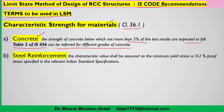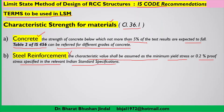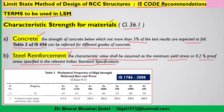The second material used in RCC structures is steel reinforcement. The characteristic value shall be assumed as the minimum yield stress or 0.2 percent proof stress, as specified in the relevant Indian Standards specification. Information about concrete was discussed in preliminary lectures, and steel reinforcement has been covered in strength of materials.